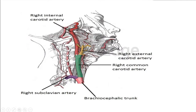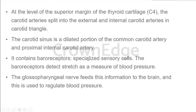That is because there are baroreceptors — specialized cells that detect stretch as a measure of blood pressure. There are also chemoreceptors. Baroreceptors and chemoreceptors are the two things associated with the common carotid artery. The carotid sinus is associated with the baroreceptor. It has specialized sensory cells that detect stretch as a measure of blood pressure. They maintain blood pressure by passing information through the glossopharyngeal nerve to the brain, which is how blood pressure is maintained.